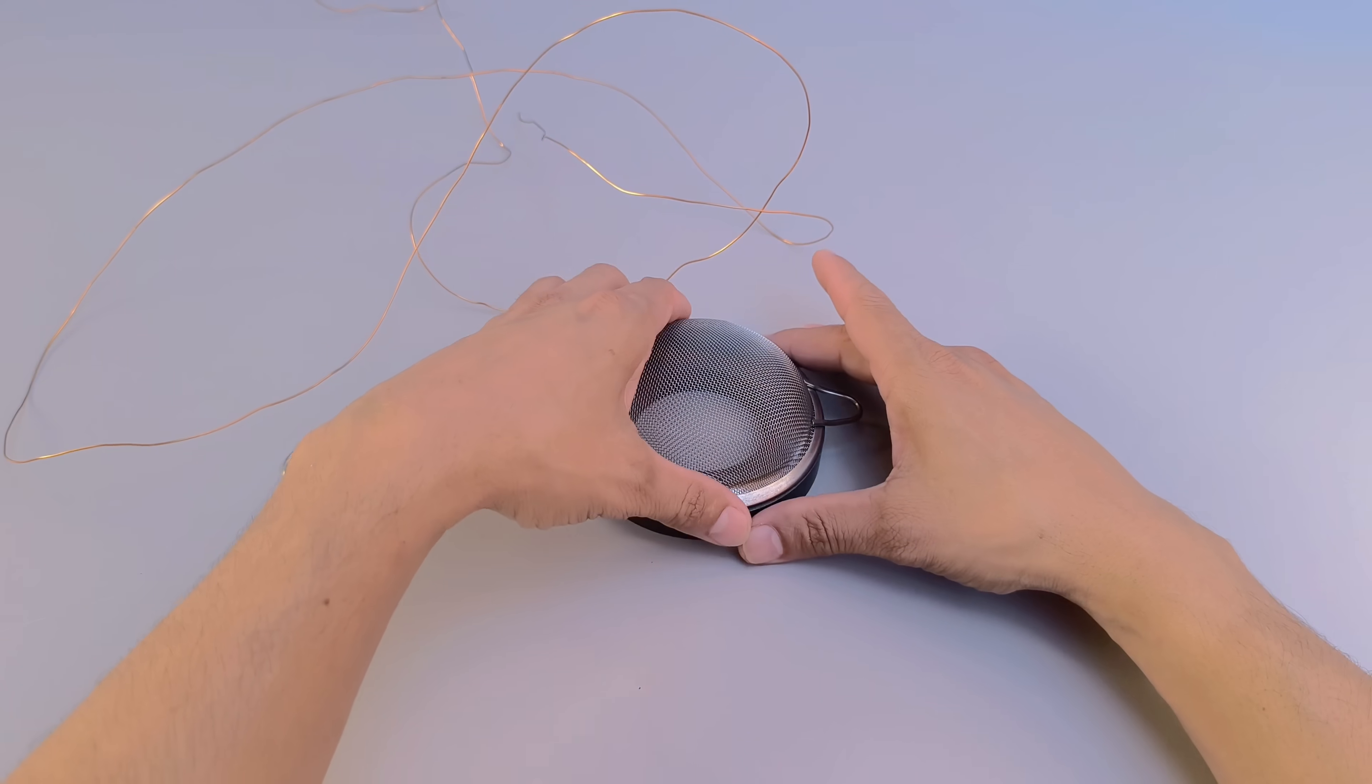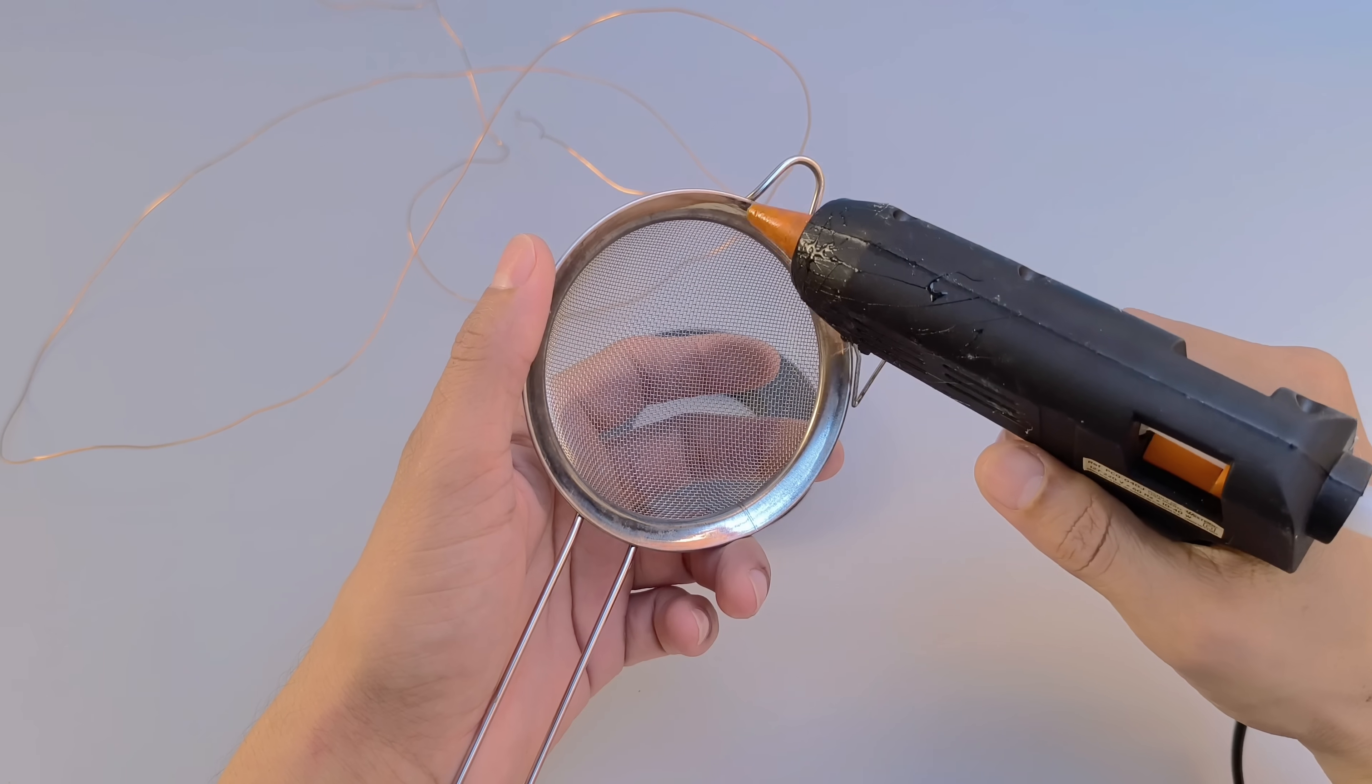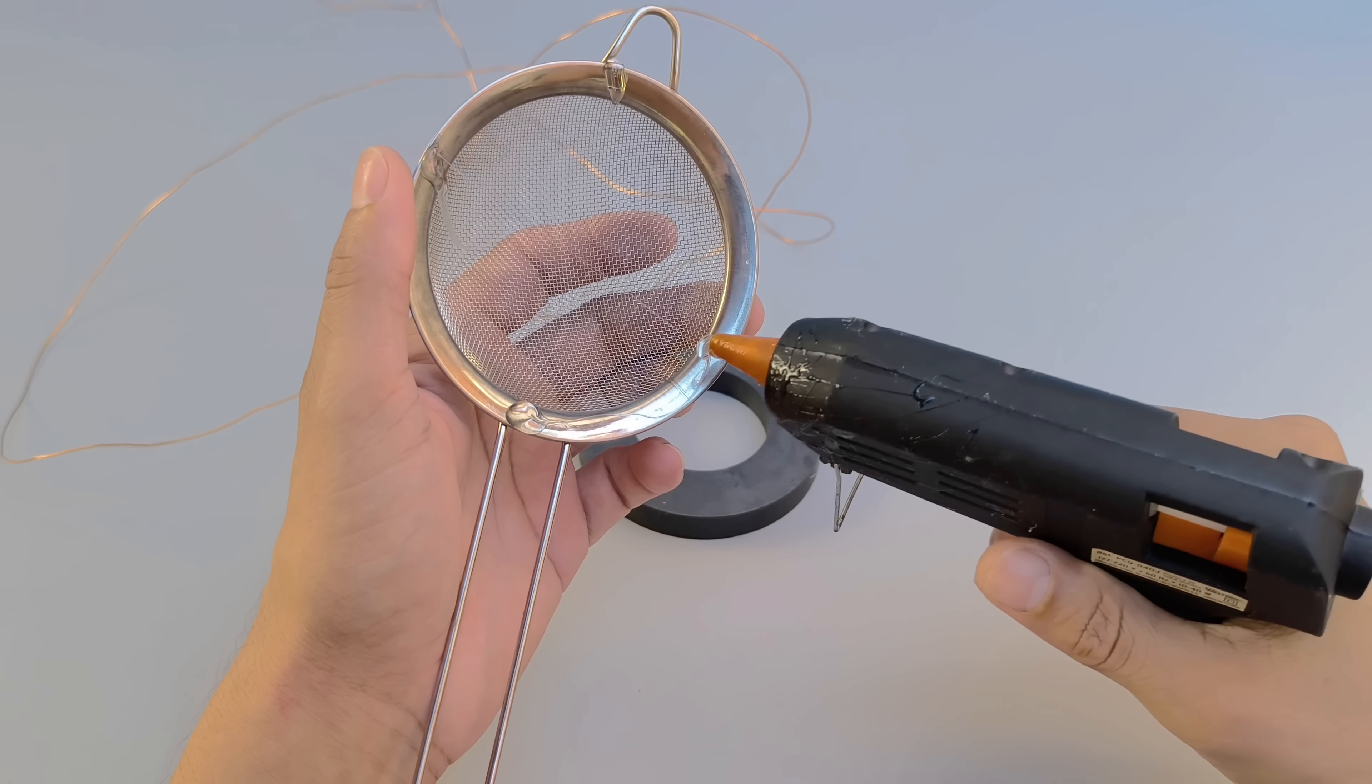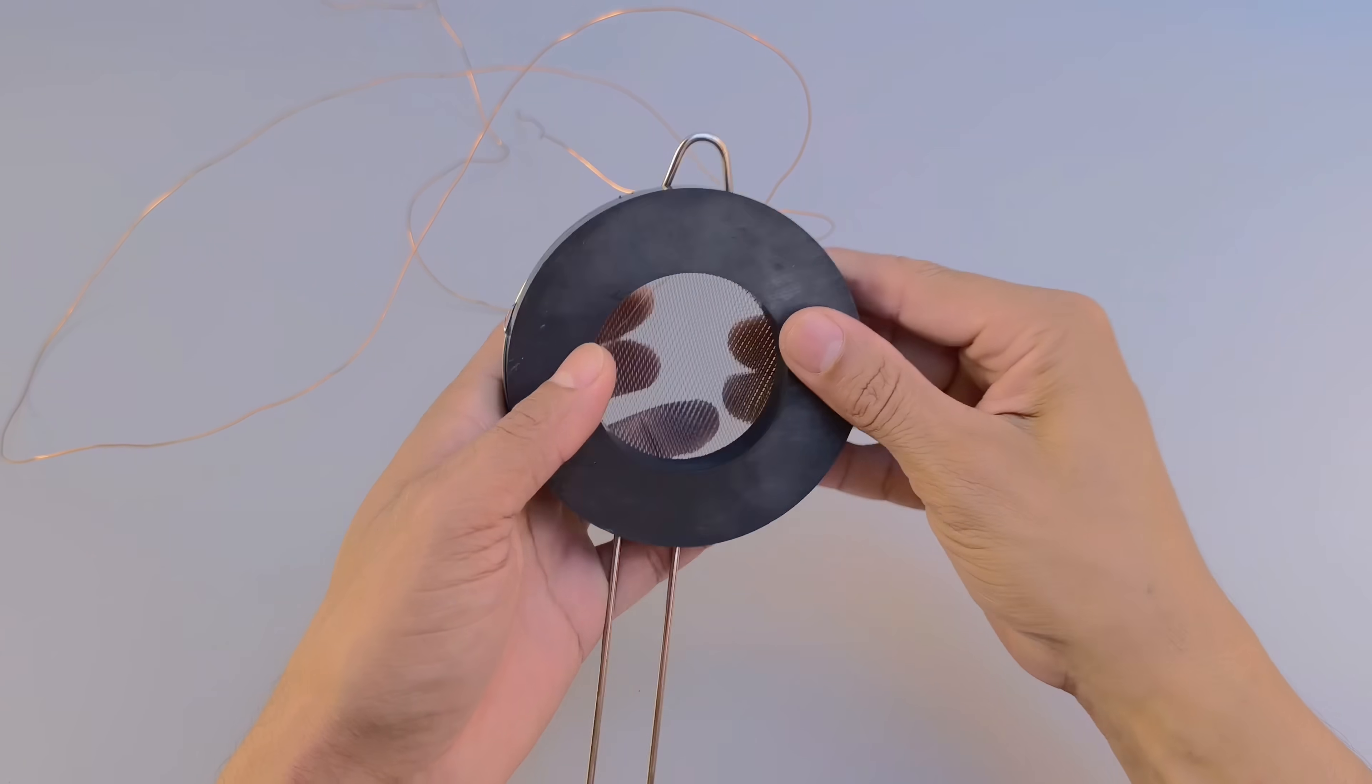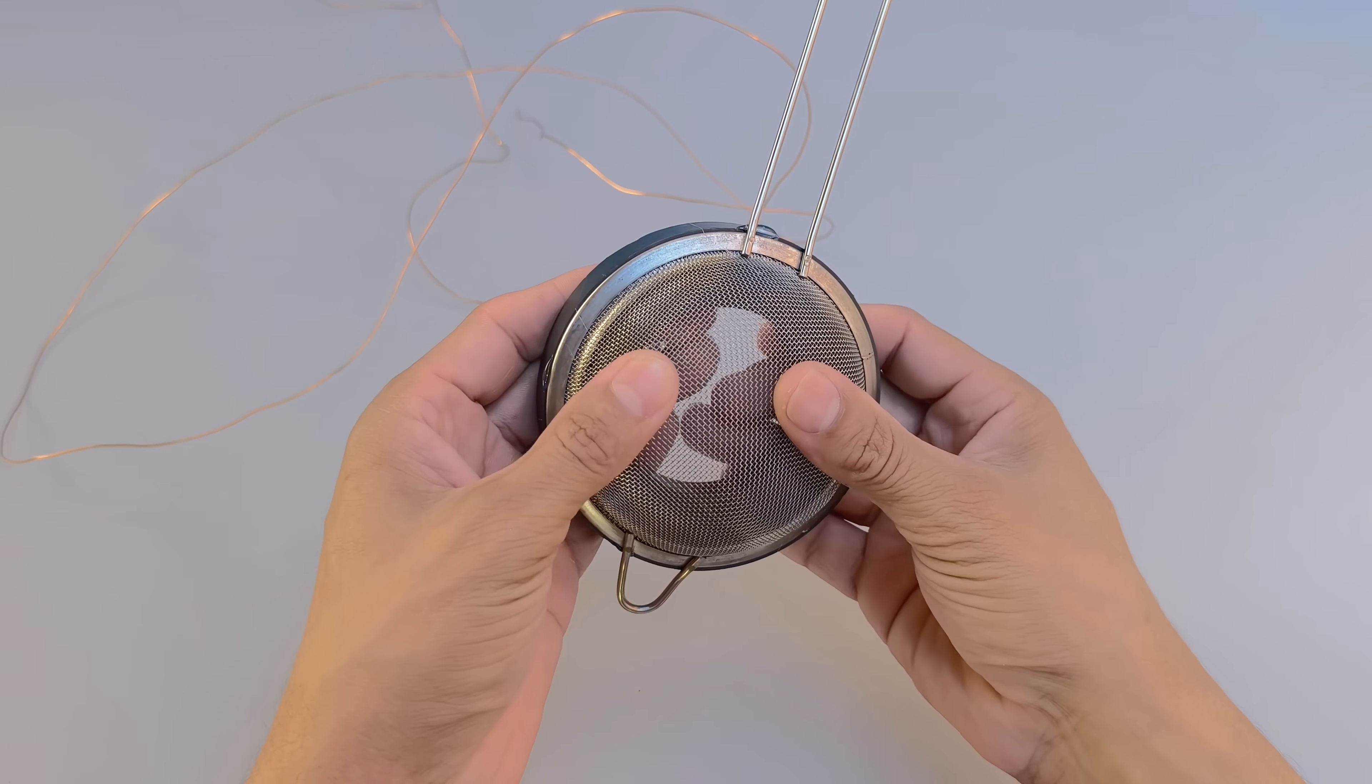The first step is to attach the magnet to the rim of the stainless steel sieve. To ensure a firm and long-lasting hold, use a hot glue stick, applying it generously to the base of the sieve and pressing it against the magnet, always centering it so that it is aligned with the diameter of the sieve. Wait a few moments until the glue cools and the magnet is firmly attached.